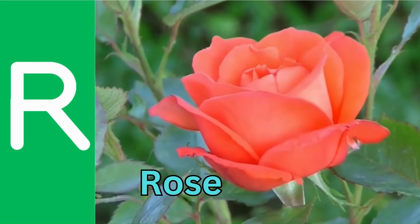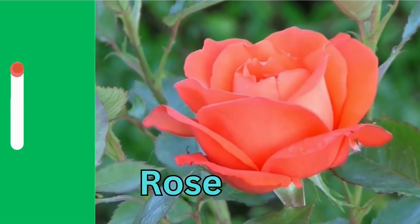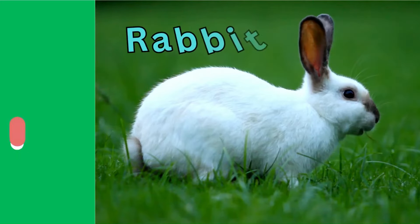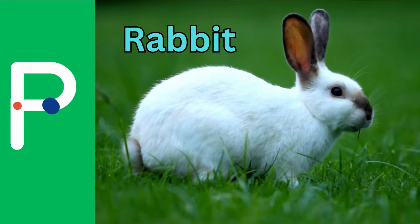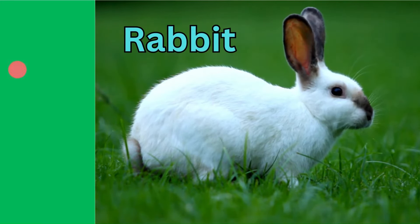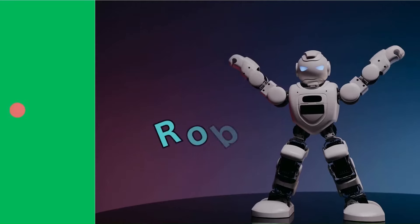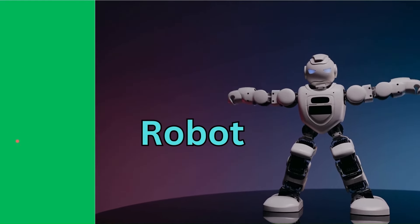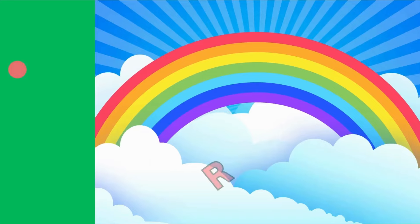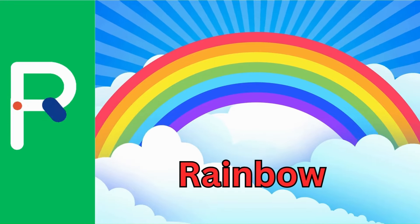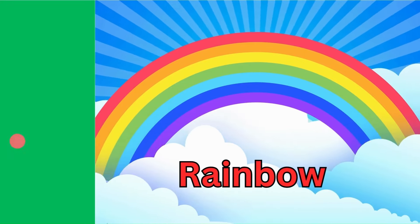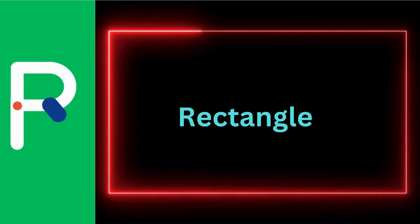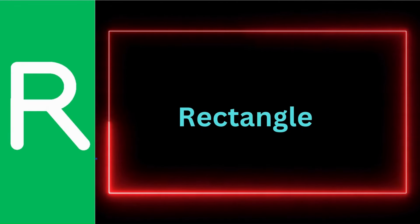R is for Rose. R is for Rabbit. R is for Robot. R is for Rainbow. R is for Rectangle.